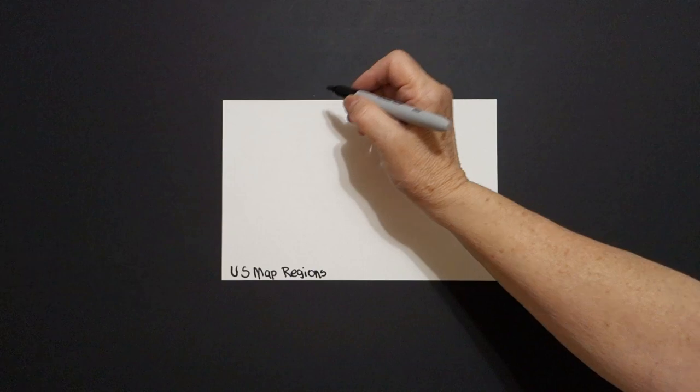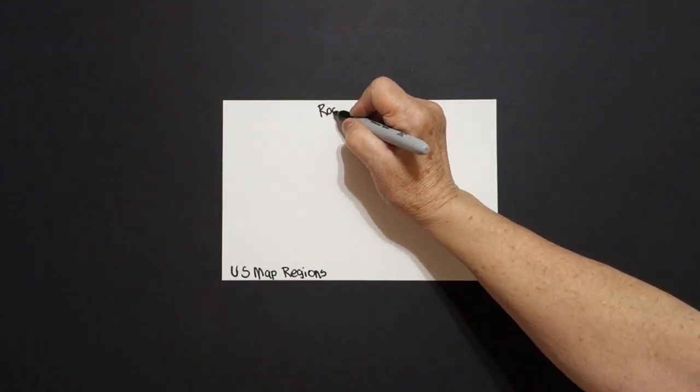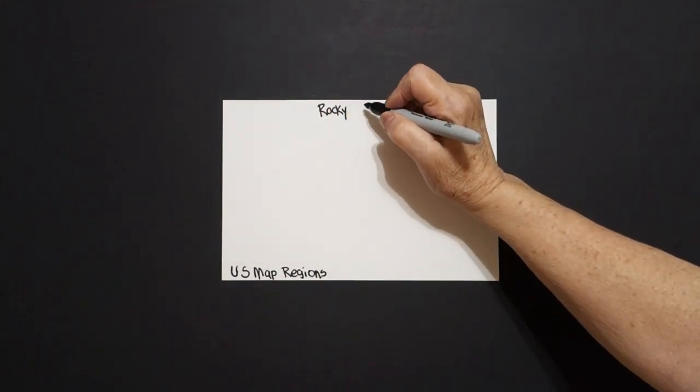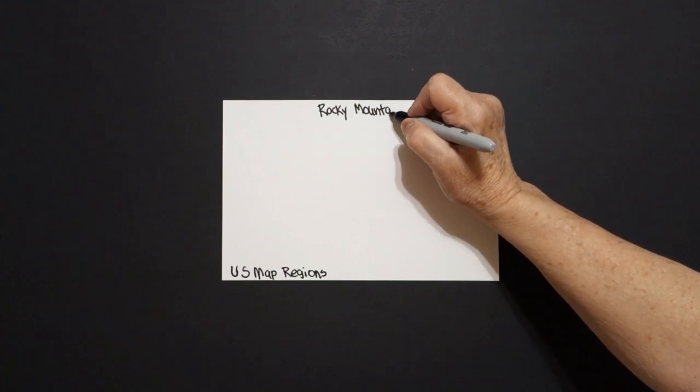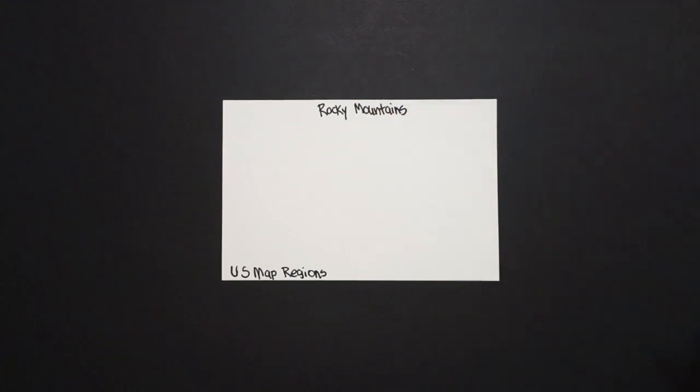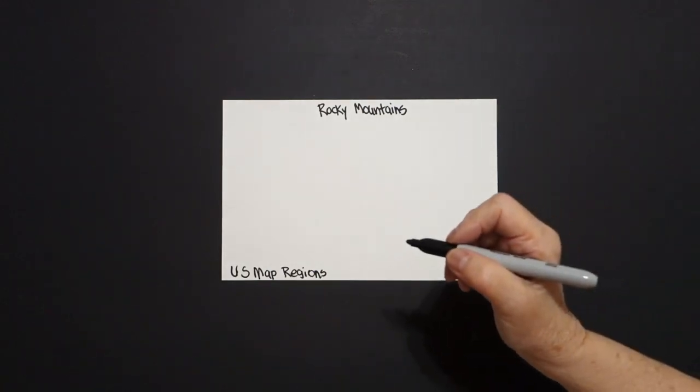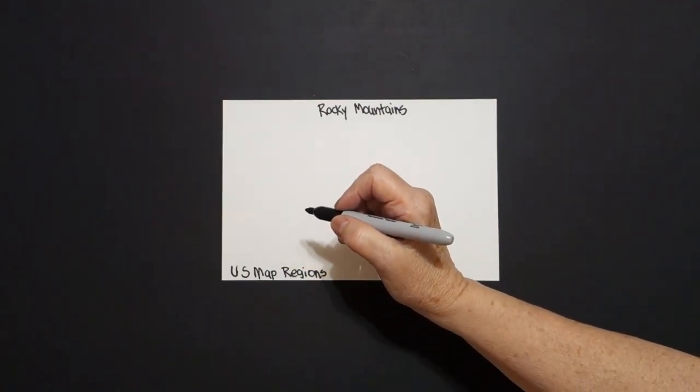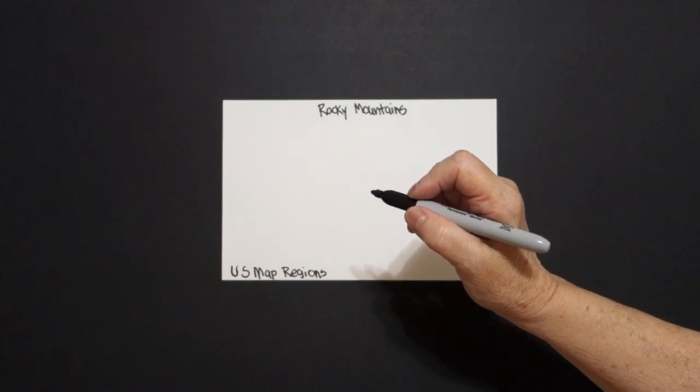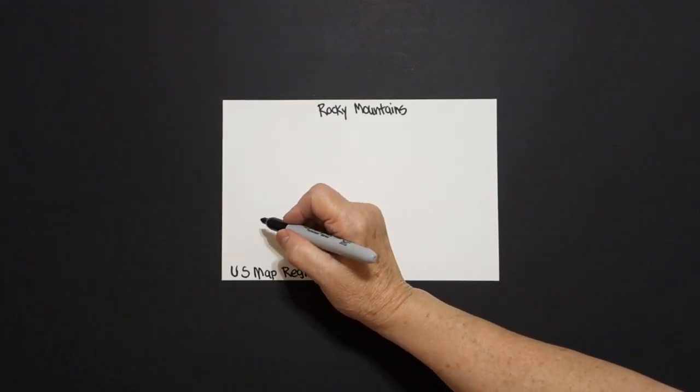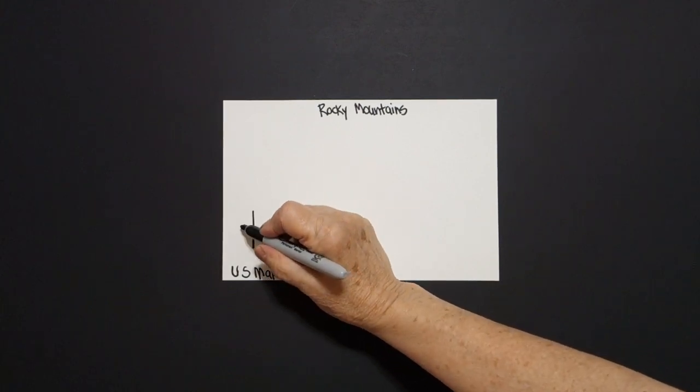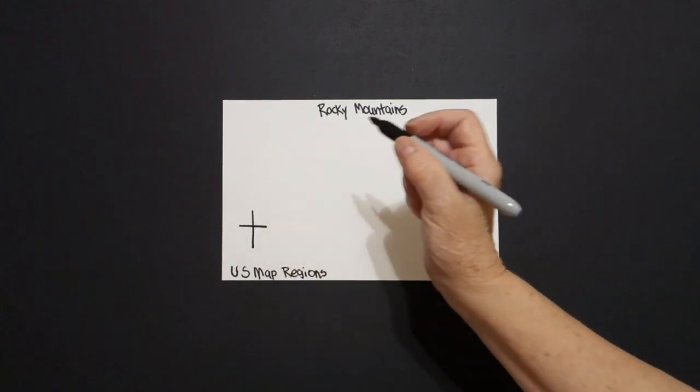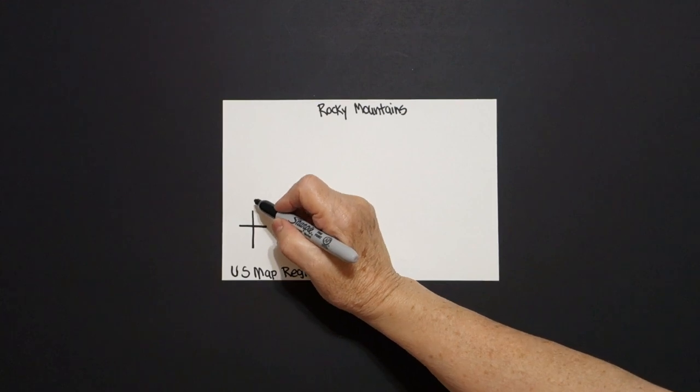And today we're going to do the Rocky Mountains. And as we move east, we had three states for the Pacific region and we had four states for the Southwest. Now we're going to the Rocky Mountains and we have six states, so they're getting smaller.